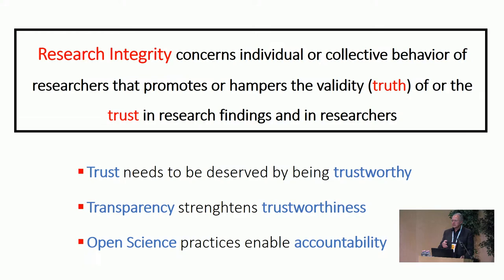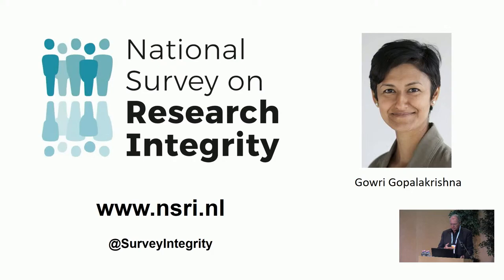And when society doesn't trust us, they will never accept implementation of what we found. So for policy, implementation, and innovation, trust is essential as well. You can get trust, but you need to deserve trust by being trustworthy. Transparency is the key thing. When we are transparent, we can be checked; we are accountable. Trust and verify — that is the idea. Open science practices are about transparency and are thus also about accountability.